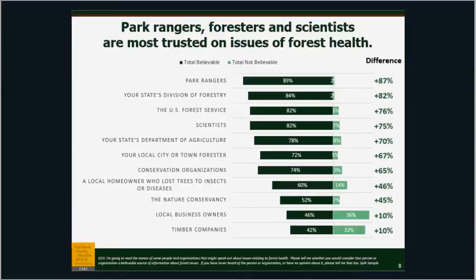Trusted messengers of the American public — these are the people that American registered voters claim are trustworthy when it comes to learning about forest health. The number one, which does not change over time, is always park rangers. The American public doesn't really understand what a park ranger is — they just think it's somebody who's at a park with a hat on — but they're extremely trustworthy. An incredibly close runner-up is your state's division of forestry employees, the US Forest Service, state department of agriculture, or scientists. All of these are highly regarded as messengers.